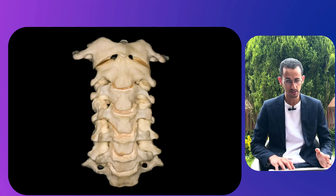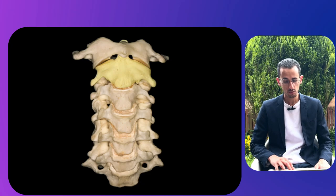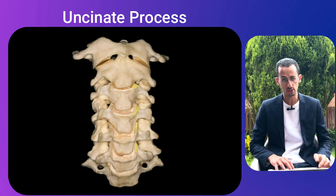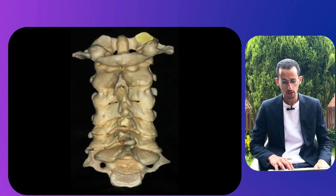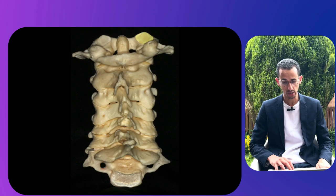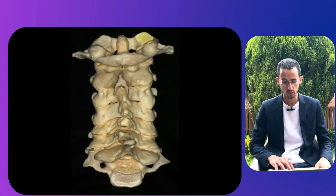We'll start with a picture of the cervical spine and talk about the main landmarks. We can see C1, the atlas, and C2, the axis. The uncovertebral processes are highlighted in yellow, showing the points where nerve roots exit. The atlas is the first cervical vertebra and connects with the occiput through the occipital condyle — that's the part of C1 that articulates with the occipital condyle.